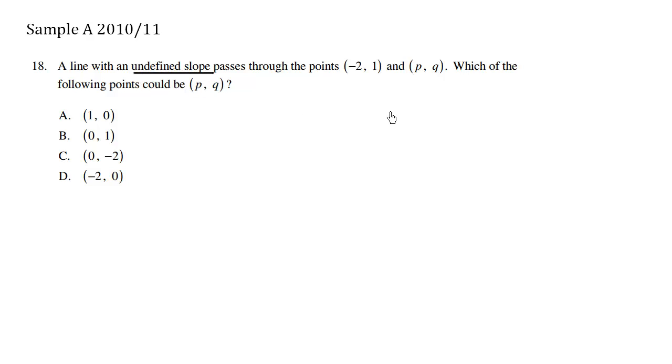We know a slope is undefined when we have a vertical line. So how do we have a vertical line?